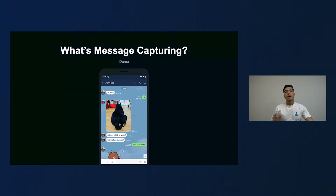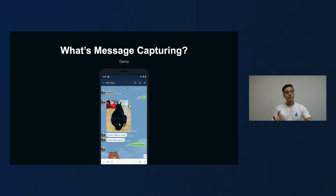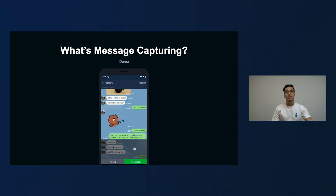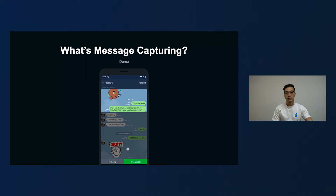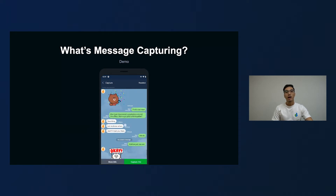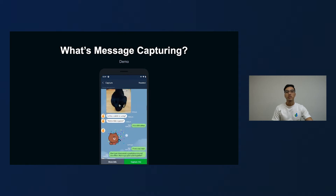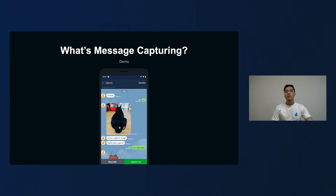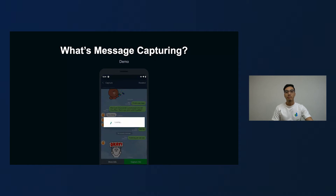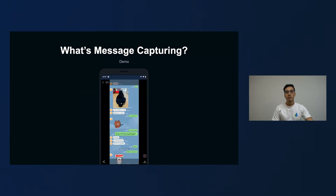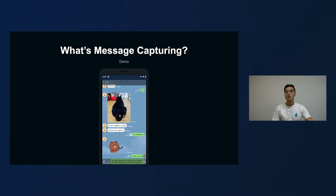If you don't know the feature well, just have a look at the video. In one of your chat rooms, you just long click on any of the messages like this, and then there's the option 'Capture'. Just click on it, and then you can start selecting all the messages that you want to capture. You can also click on 'Hide Info' to hide the sender's information, because a little anonymity wouldn't hurt. And once you're done, just click on the capture button, and then you can see the results — which is a long screenshot of messages.